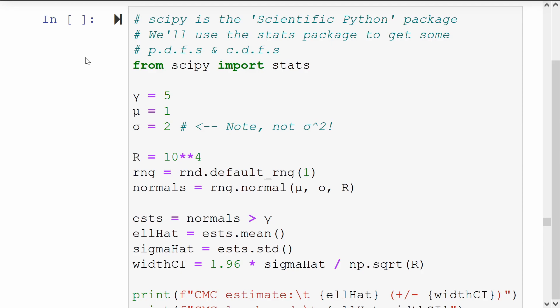We first import the statistics module from the SciPy library. We'll need this to calculate PDFs and CDFs of standard distributions. Next, we're bringing in the constants related to our problem: gamma, mu, and sigma. We'll note that because the random number generator requires a standard deviation and not a variance, we are only storing sigma, not sigma squared.